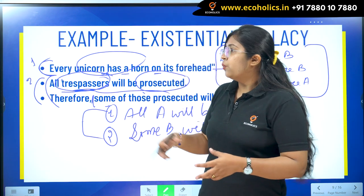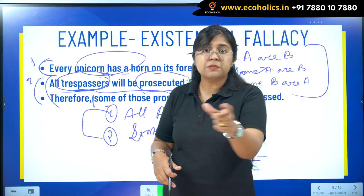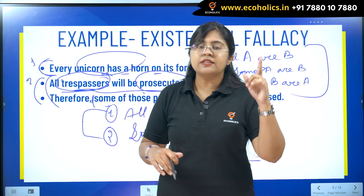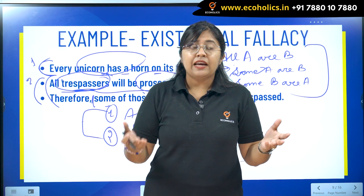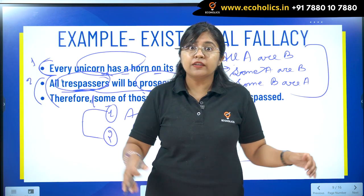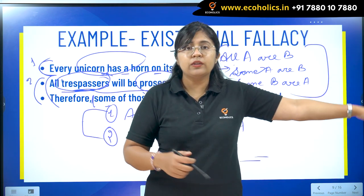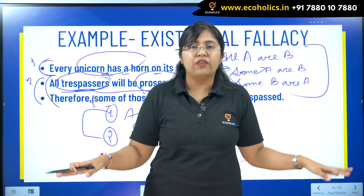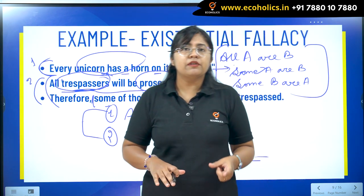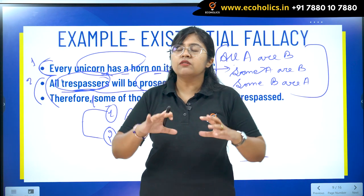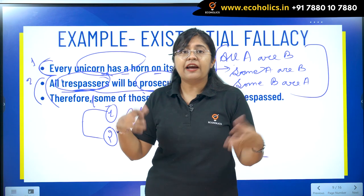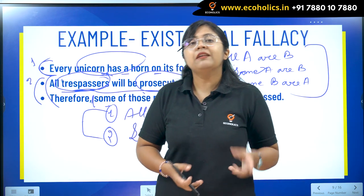The unicorn example is famous because just by looking at a specific argument we cannot generalize it — otherwise there will be an existential fallacy. We say all unicorns have horns on their heads, but it depends on the unicorn's existence. Similarly, I can say all dinosaurs can fly, but for that I need dinosaurs to exist so I can verify it. You can always imagine creatures or things that do not presently exist, derive an argument, and make a conclusion — just to practice identifying such fallacies.